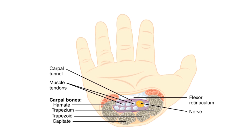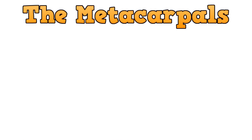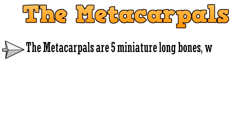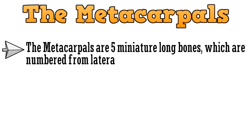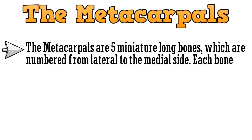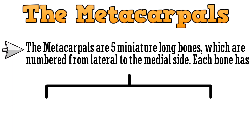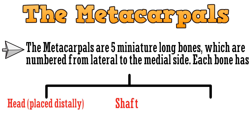With this, we complete the carpal bones and move on to the metacarpals. The metacarpals are 5 miniature long bones, numbered from lateral to medial side. Each bone has a head placed distally, a shaft, and a base placed proximally.